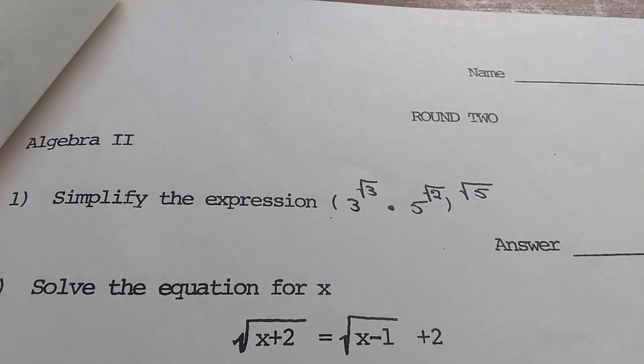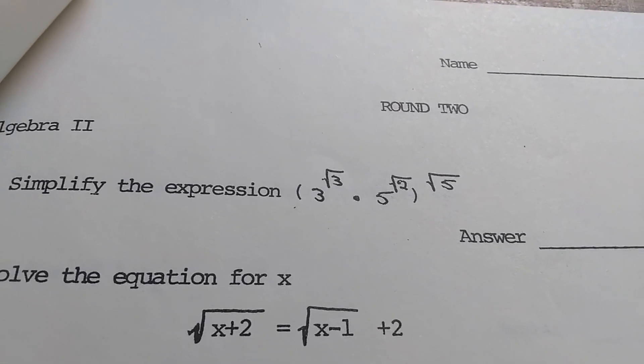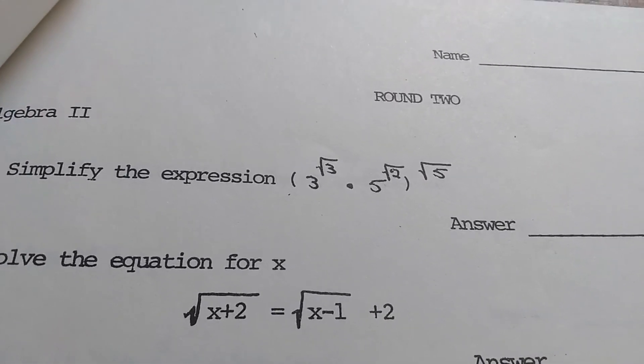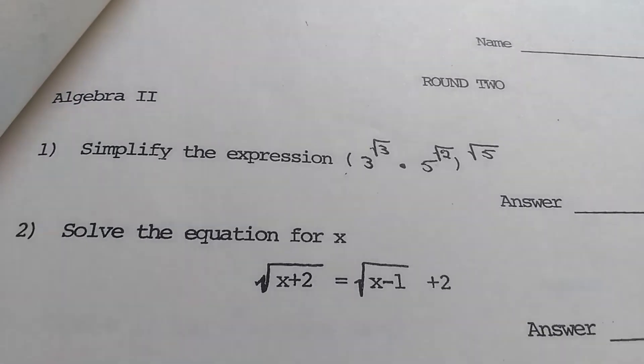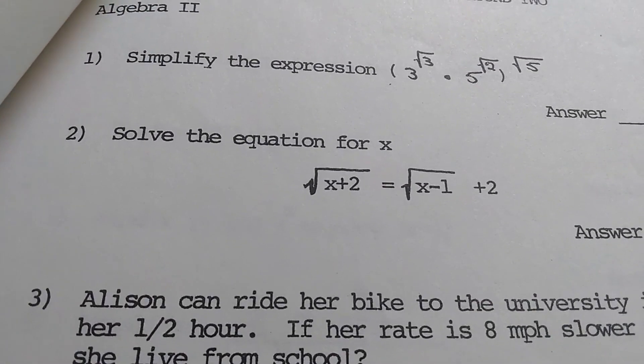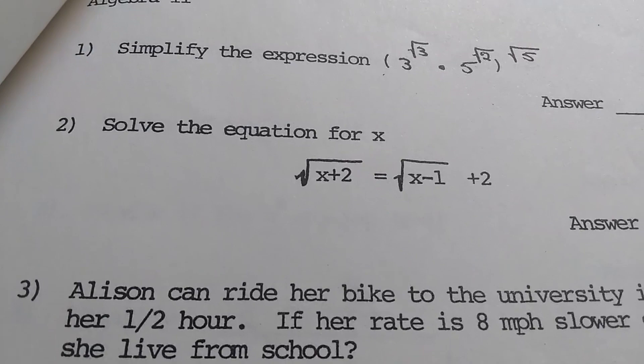Looks like we have another simplification question. And again, they've penned in the information, right? That's handwritten, not typed. Same thing here. It looks like those square roots are handwritten.